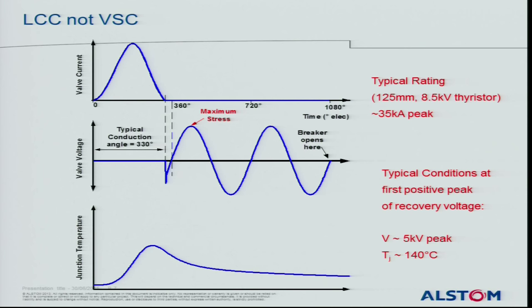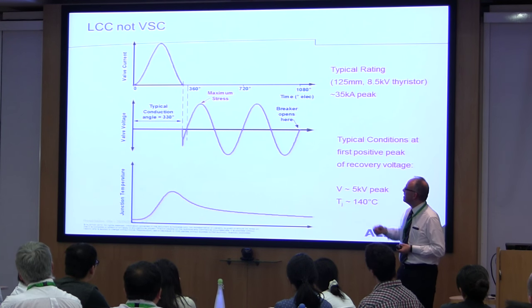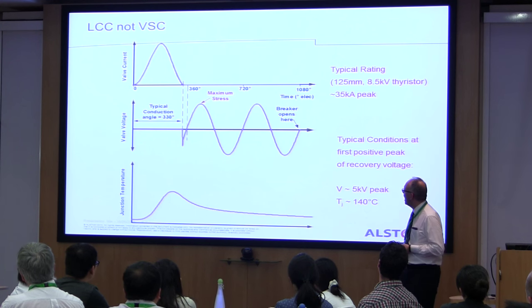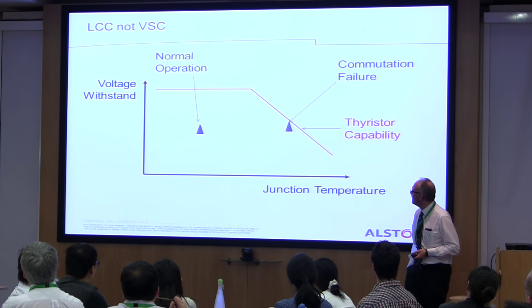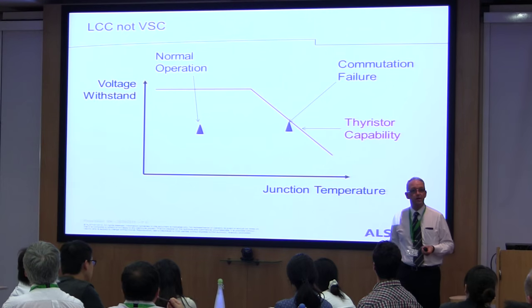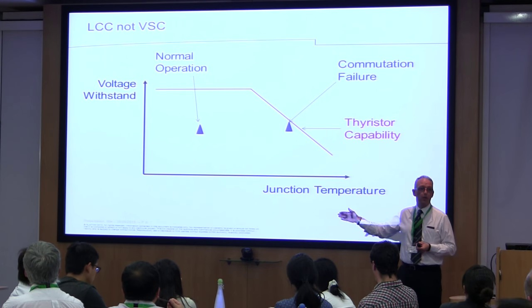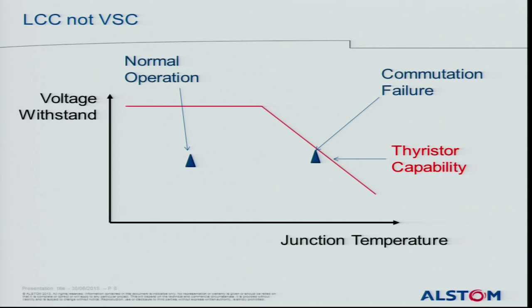From an HVDC design point of view, you can't stop commutation failures from happening. There is always the risk that a sufficient magnitude shift in the AC system will cause one. You can mitigate the risk, but you always have to design for it — taking into account the increase in junction temperature in the thyristors and the voltage they will see on recovery. So from a valve design perspective, we must account for both normal operation and transient events such as commutation failure, while remaining within the thyristor's capability envelope.